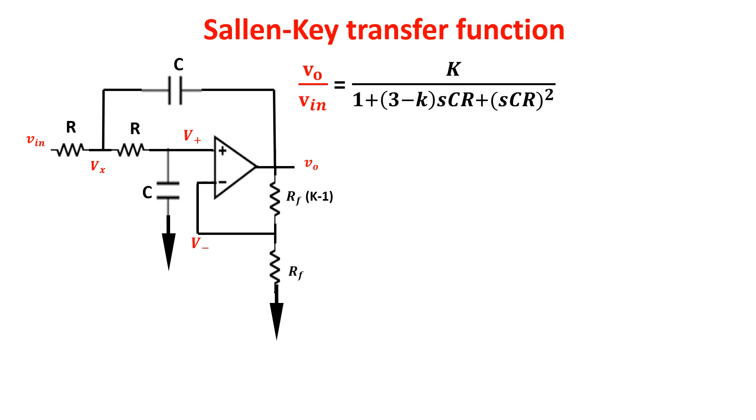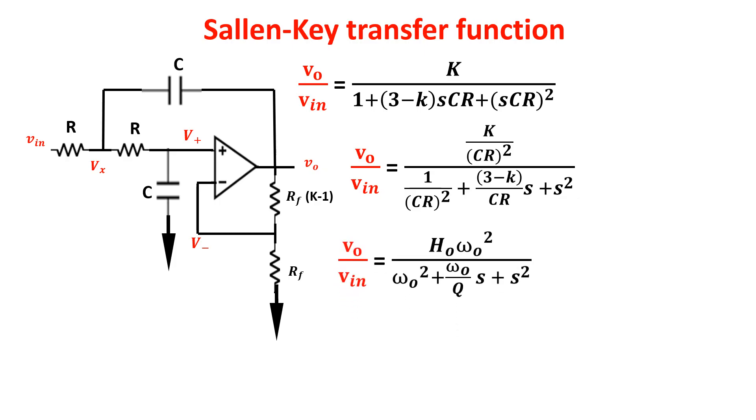This equation can be written in this form dividing numerator and denominator by CR square. This form is more convenient because it is the standard form in which we can see the cutoff frequency and the quality factor Q.